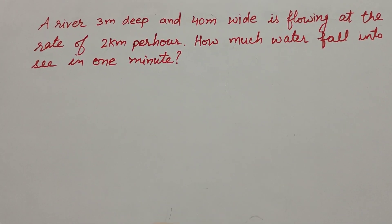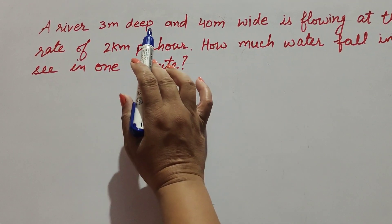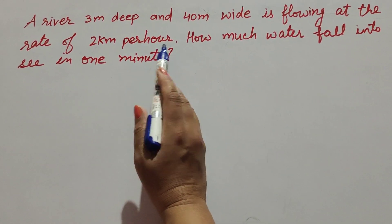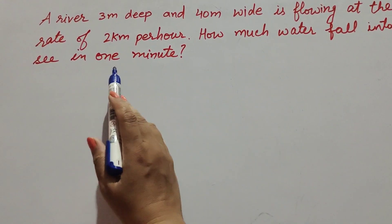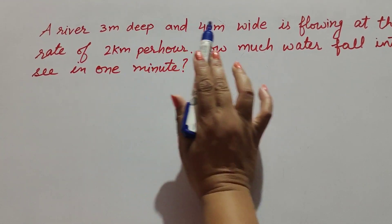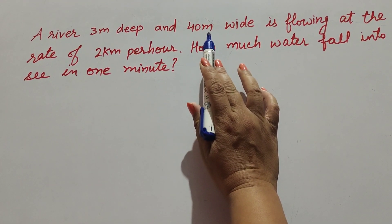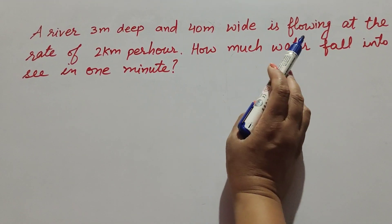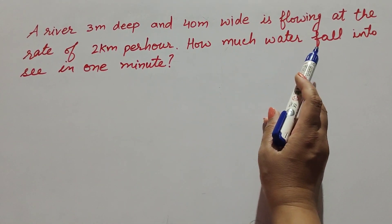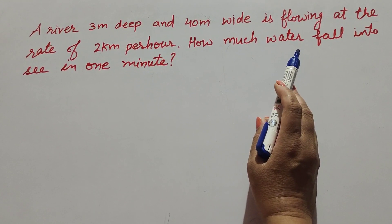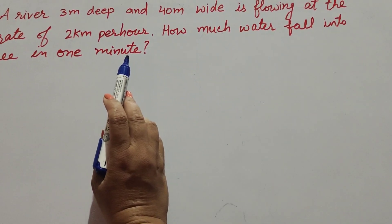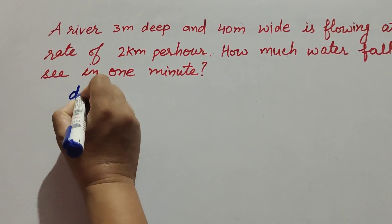Hello friends, welcome to my channel. In this video we discuss: a river 3 meter deep and 40 meter wide is flowing at the rate of 2 kilometer per hour. How much water falls into the sea in one minute? In this question, the given values are depth of river = 3 meter, width of river = 40 meter, flow rate = 2 kilometer per hour, and we need to find the amount of water falling into the sea in one minute.